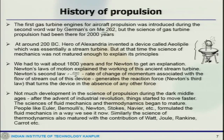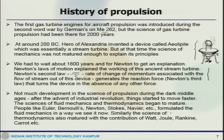We had to wait about 1800 years for Newton to give an explanation when he proposed his laws of motion, which helped the whole scientific community. During the dark ages there was not much development, but after the industrial revolution things moved faster. The sciences of fluid mechanics and thermodynamics began to mature through people like Euler, Bernoulli, Newton, Stokes, and Navier in fluid mechanics, and Watt, Joule, Rankine, and Carnot in thermodynamics.